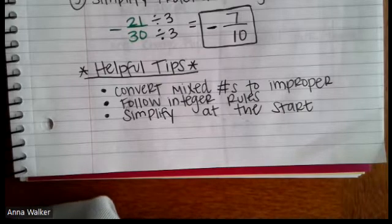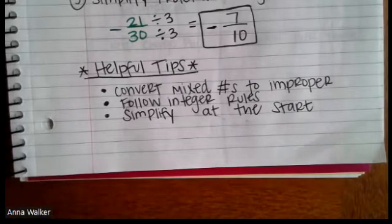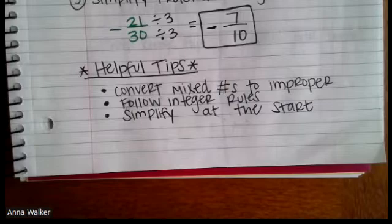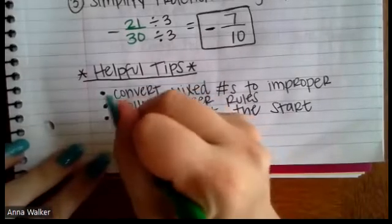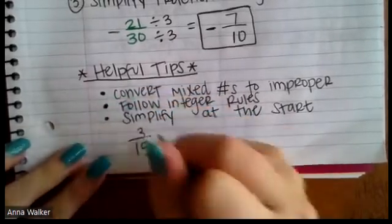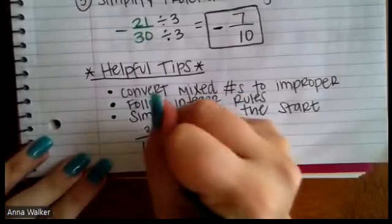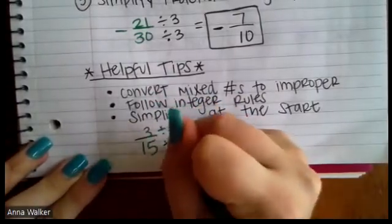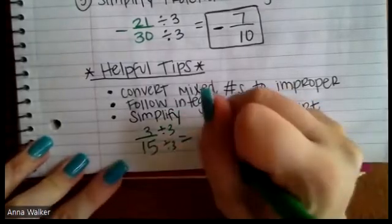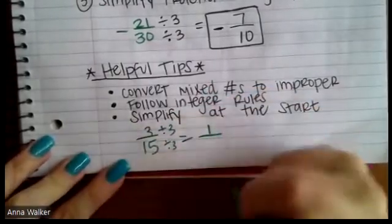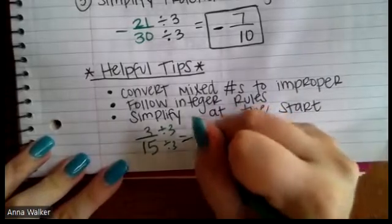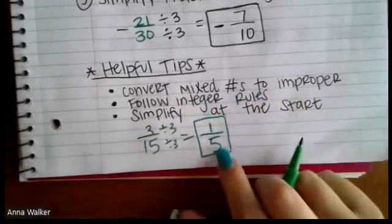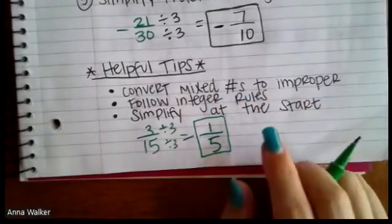And then the last step is if you can simplify at the start, I would encourage you to do that. So for example, up at the top, we have the number three-fifteenths and three-fifteenths can actually simplify. We can divide both of those by three. And this simplifies to three divided by three is one. Fifteen divided by three is five. So this simplifies to one-fifth.